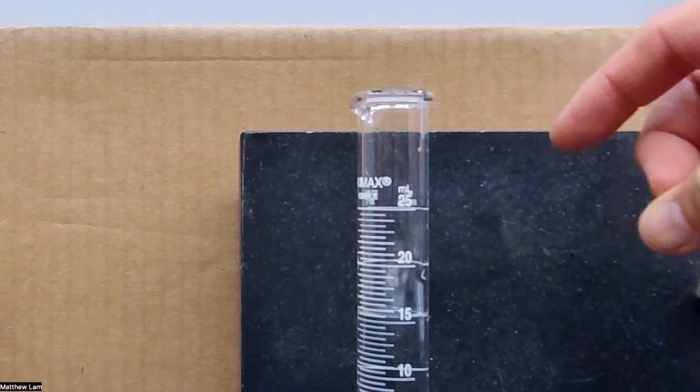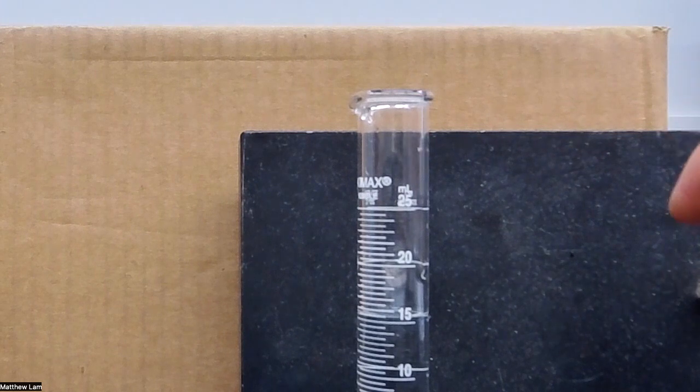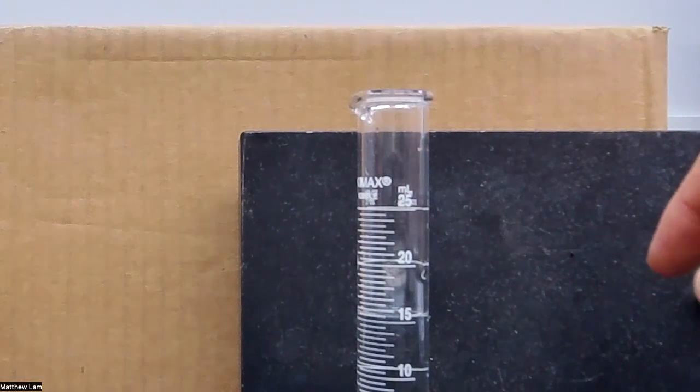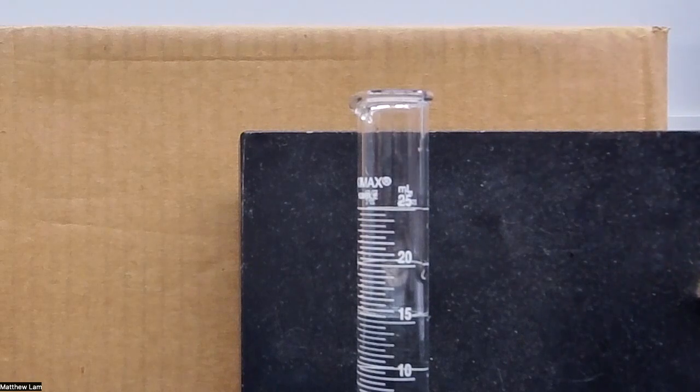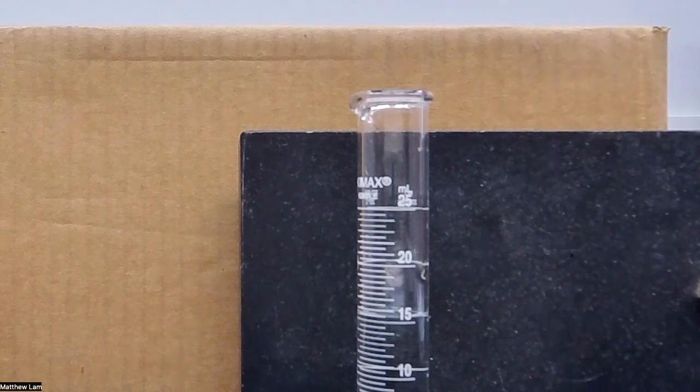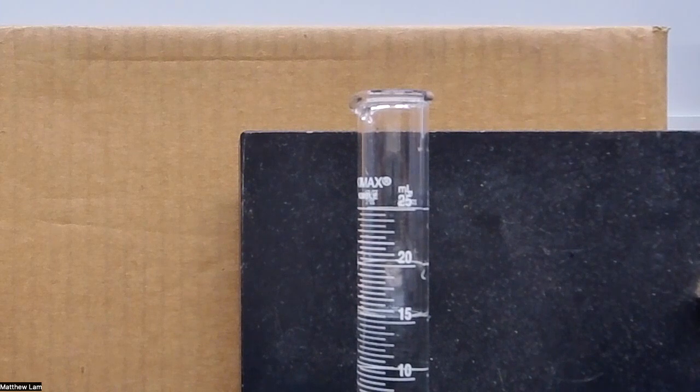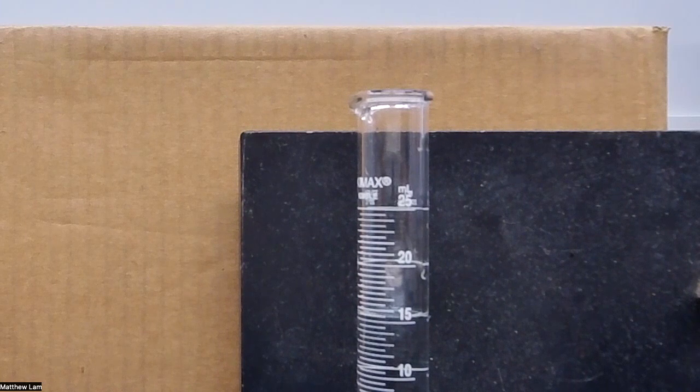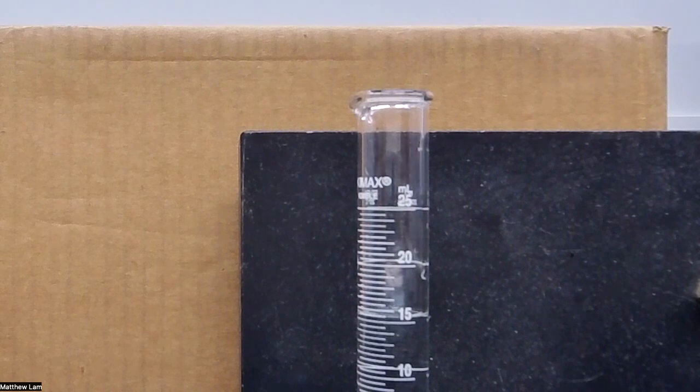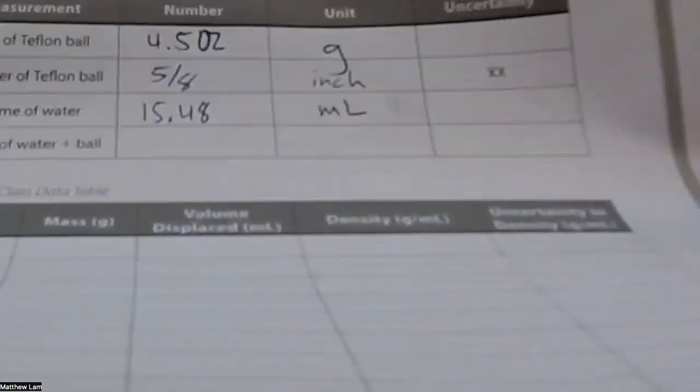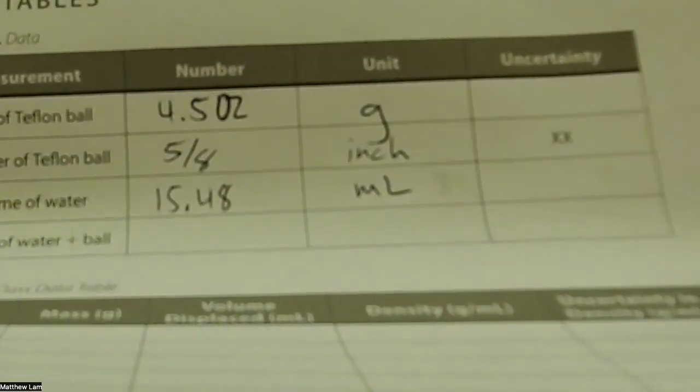And so if I was to read this, it looks like—I know it's a little hard to see—but it looks like it's just under 15.05 mils. So I'm going to just go ahead and guess that it's around 15.048 mils. So 15 point, excuse me, not 15.048, 15.48, and then mils. And so in my manual, this is a measurement I have before I throw in the Teflon ball. So 15.48 mils.